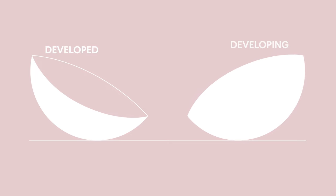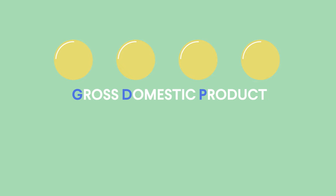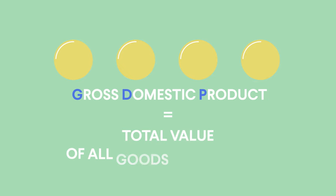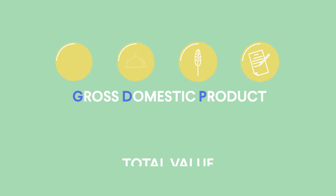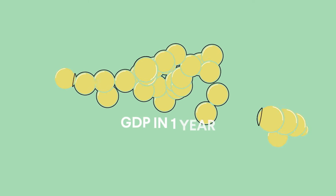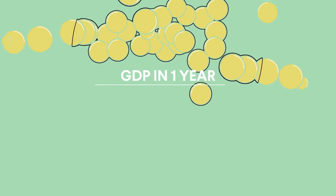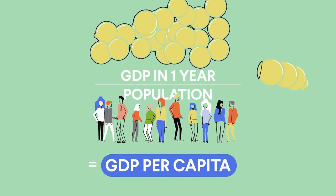We often hear people divide up the world into developed and developing countries. But what do those labels mean? The best measure is to take the size of a country's economy, its gross domestic product or GDP, which is the total value of all goods and services — from crops to cars and from waiting tables to writing wills — that are traded or produced within the borders of a country over a period, normally a year, and then divide it by the number of people that live there. This is called GDP per capita.